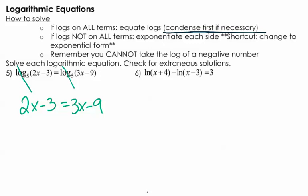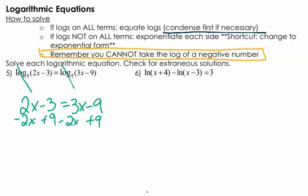Once you do that, the logs drop off and you can solve. Now, you do have to remember here that you cannot take the log of a negative number. So when you solve, you're at the potential risk of an extraneous solution. So we've got to just check for that. Keep that in mind. So go ahead and solve this, subtract 2x, add 9, easy peasy. So we'll have 6 equals x.